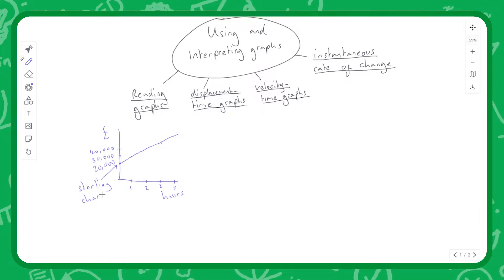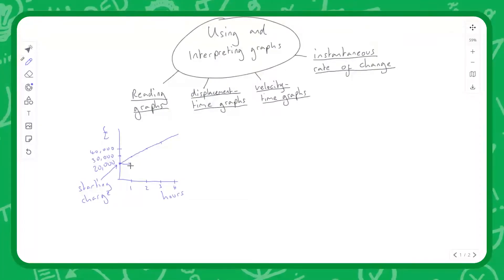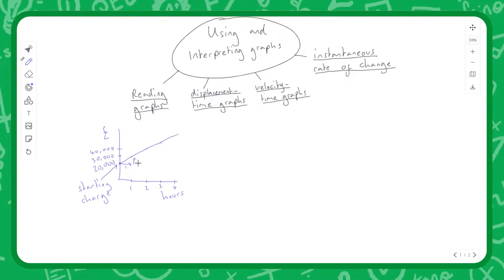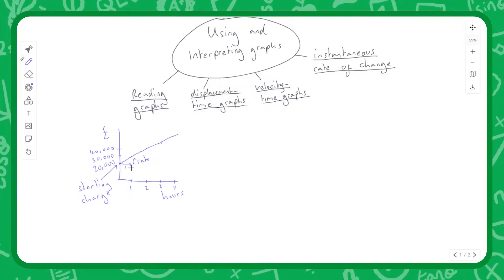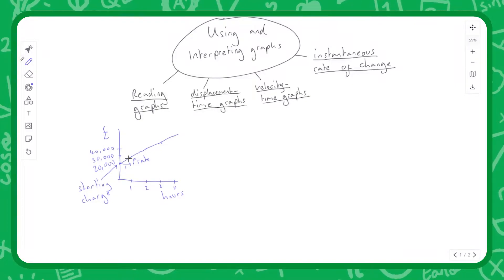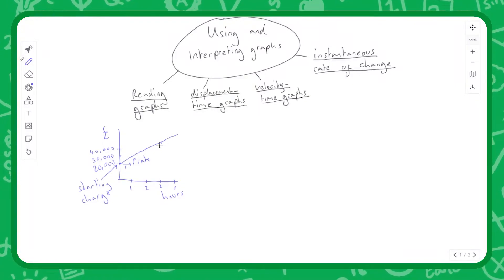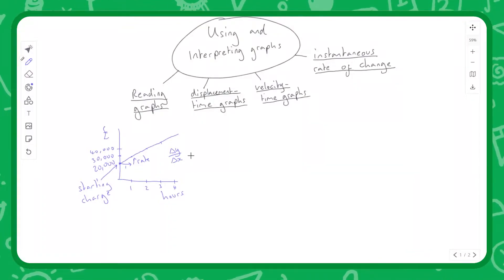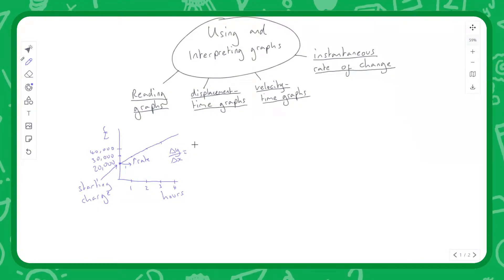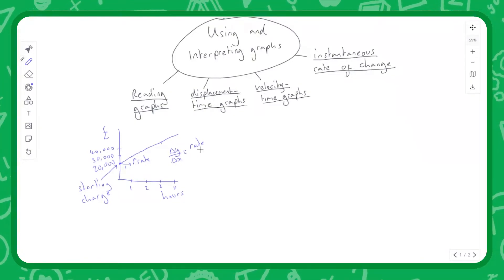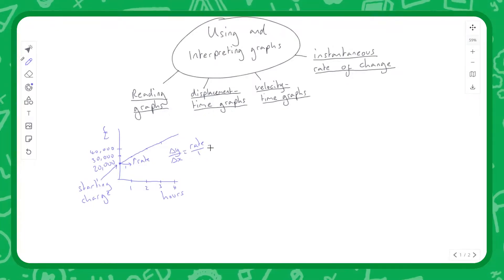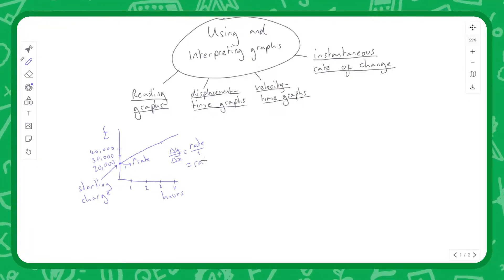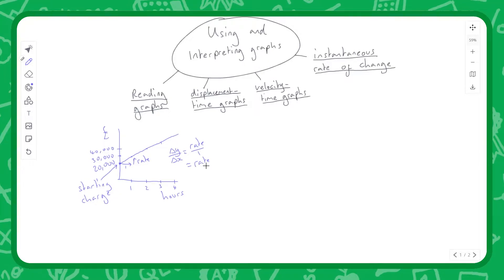The gradient represents the hourly rate. When we move along one unit in the x-direction, we move up by Elton John's hourly rate — in this case £10,000. The gradient of a graph is change in y over change in x, so in this case it's just the rate over one, which equals the rate. The gradient of this graph represents the hourly rate.